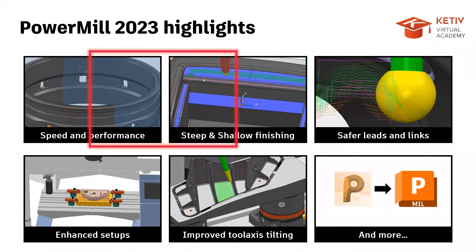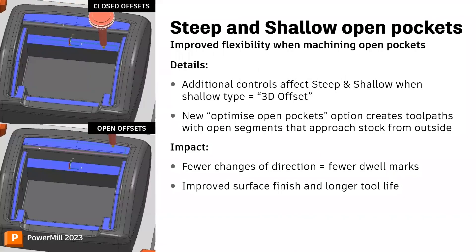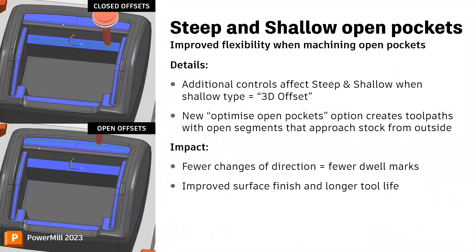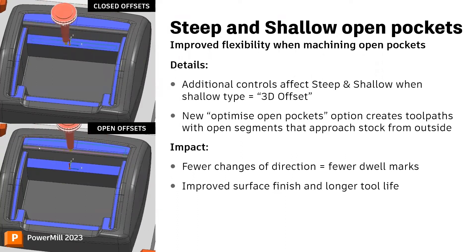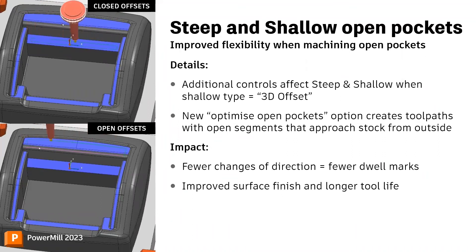Steep and shallow in 2023 includes a new option to control the shape of toolpaths generated for shallow regions when using the 3D offset style. Previously, all shallow regions were machined with concentric closed offsets. Now there's an option to choose open offsets — a checkbox in the toolpath form. You can see in the comparison video: 2022 shows closed offsets, while 2023 shows open offsets.